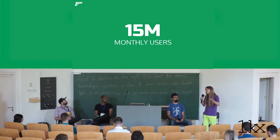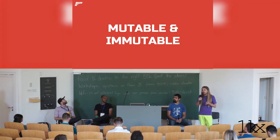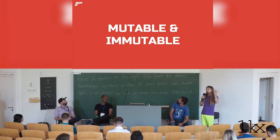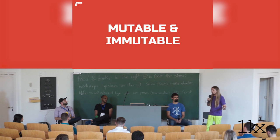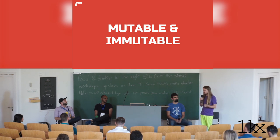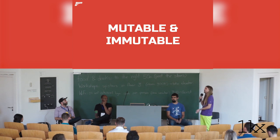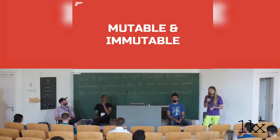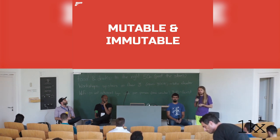We're not a blockchain, there's no coin. The reason we've been able to hit this type of scale is specifically that we support mutable and immutable data. If you're running a decentralized app like Google or Uber, being able to mutate your index is very important. Updating GPS coordinates of a driver can happen hundreds of times per second on GUN in a peer-to-peer network.